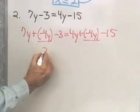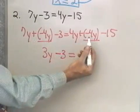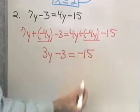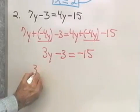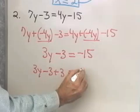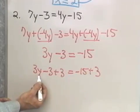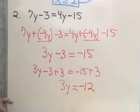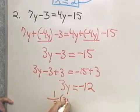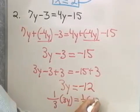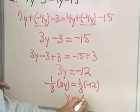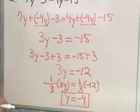7y plus negative 4y is 3y, minus 3, equals 4y plus negative 4y which is 0, leaving negative 15. I've succeeded in getting rid of the y's on the right side. Now I'll add 3 to both sides using the addition property. 3y plus 0 is 3y, equal to negative 15 plus 3, which is negative 12. I multiply both sides by 1/3, and the answer is y equals negative 4.